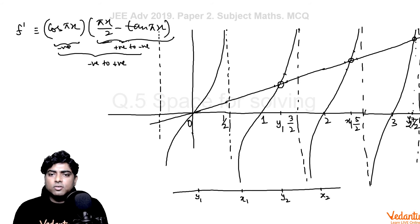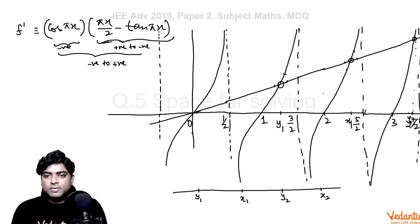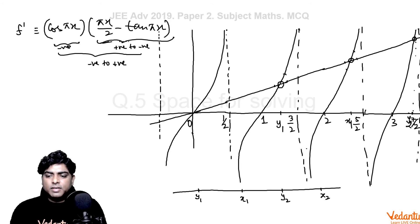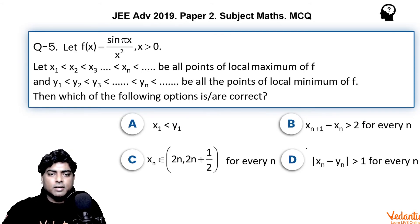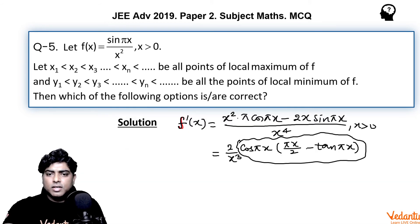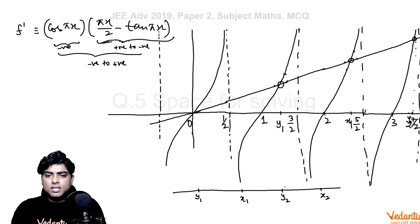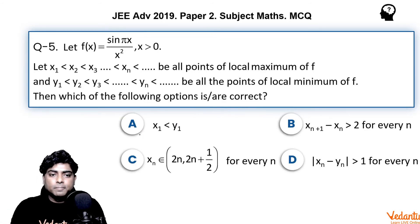Plotting this on the number line, the order of critical points is: y₁, then x₁, then y₂, then x₂, and so on alternating. Coming to Option A — is x₁ < y₁? From the ordering we can see x₁ is not less than y₁; in fact x₁ > y₁. So Option A is incorrect.